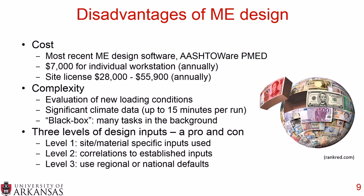Finally, there are three levels of design inputs — which is actually both a pro and a con. Level one has site- and material-specific inputs; level three uses regional and national defaults; and level two is somewhere in the middle. This is nice because you have the opportunity to use a lot of data from the materials, climate, and traffic for that project, giving a high level of accuracy. But that is also much more expensive to collect. So the three levels of designs are kind of a double-edged sword.